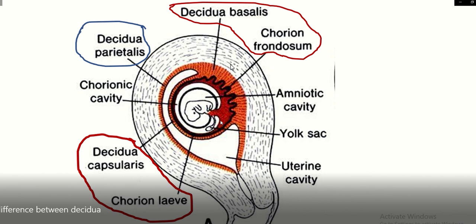Decidua, chorion, and the cavities can be confusing, so from within outward: the fetus is surrounded by the amniotic cavity, then there is the amnion, and outside the amnion is the chorionic cavity. Within the chorionic cavity the yolk sac is present, and outside the chorionic cavity is the chorion.